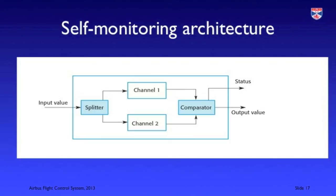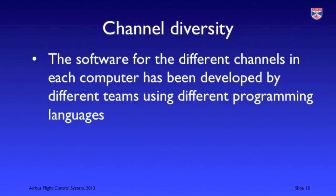This diagram shows what happens: an input signal is split so that it is sent across each channel. The computation is carried out and a comparator checks that the results are the same and that they've been carried out at the same time. It then passes on the output value plus a status value indicating whether the computation has been successful. The processors in each of the channels are provided by different manufacturers, and the software in each channel is diverse — it was developed by different teams, reducing the likelihood of a common problem in each channel.